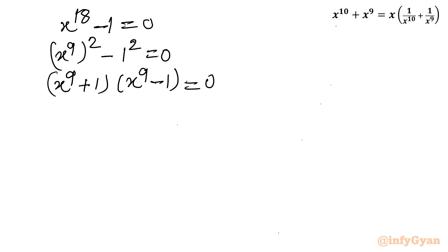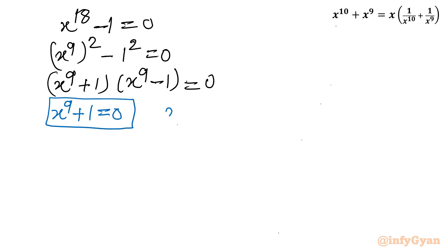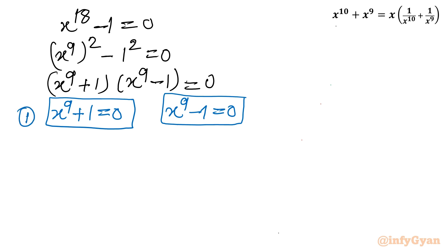Since f·g = 0, either f = 0 or g = 0. So we get two equations: Equation 1 — x^9 + 1 = 0, and Equation 2 — x^9 - 1 = 0. Let us solve these two equations.